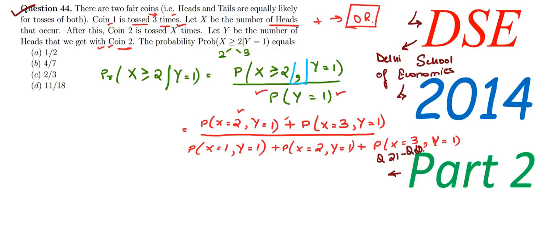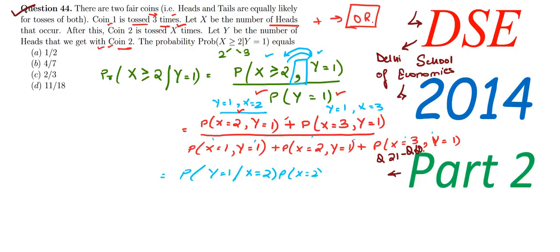Now let's transform this using the conditional probability formula. The intersection part means both are occurring together — it doesn't matter which we write first. So let this be assumed as P(Y=1, X=2) and P(Y=1, X=3). Similarly in the denominator we do the same thing, and then we can write this as conditional probability.